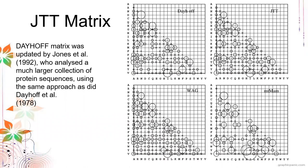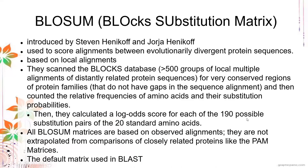Now for the JTT matrix — this uses a similar approach to the Dayhoff model but references a larger collection of protein sequences, resulting in different values. WAG and MTMAM follow the same idea as the Dayhoff model but are derived from different sets of protein sequences.